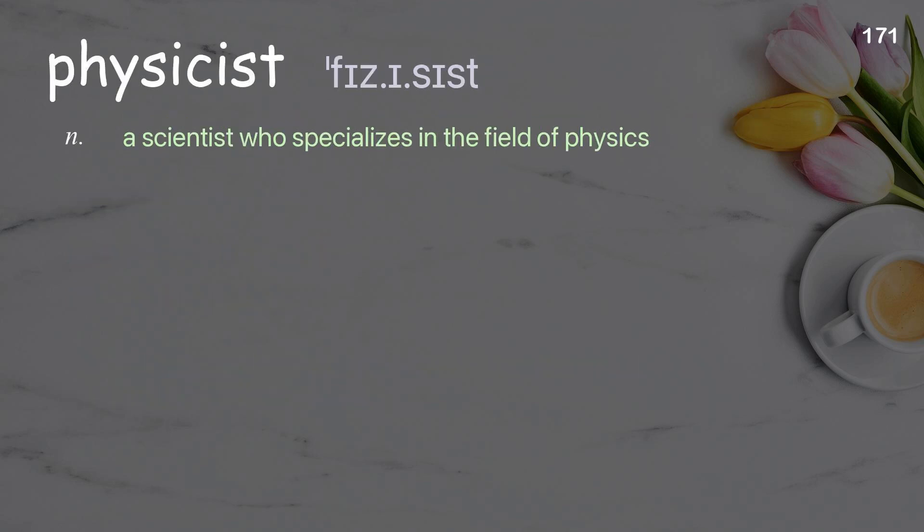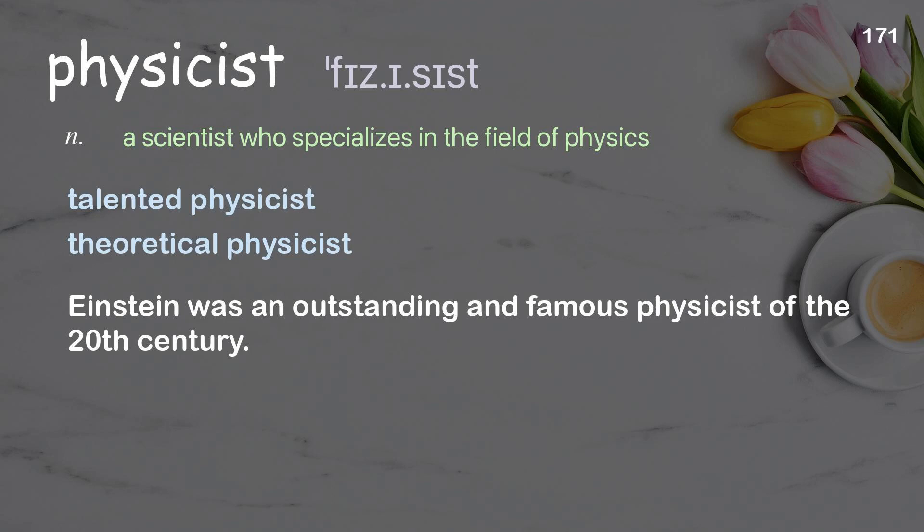Physicist: a scientist who specializes in the field of physics. Examples: talented physicist; theoretical physicist. Einstein was an outstanding and famous physicist of the 20th century.